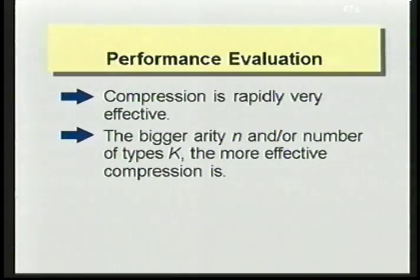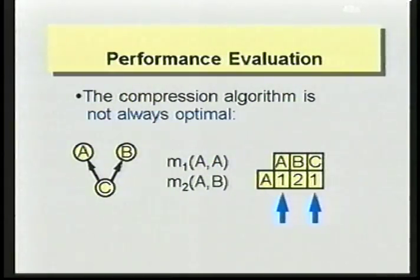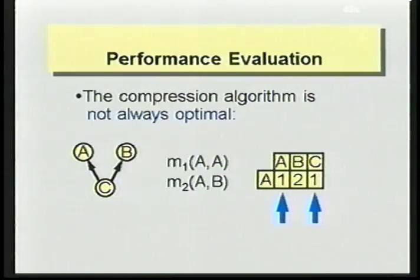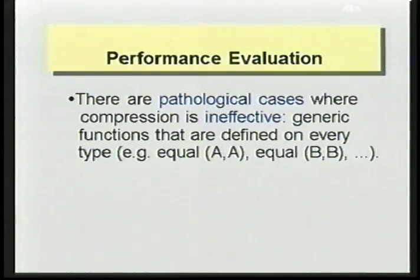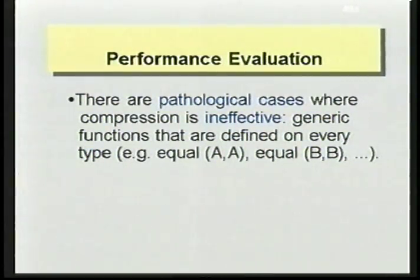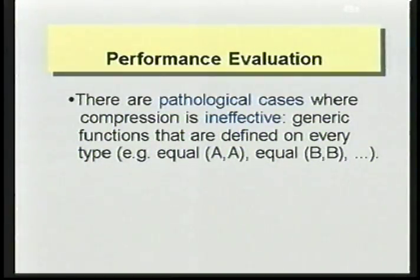For the bad news: the compression algorithm is not always optimal. There are cases where after compression, two columns are still identical. Moreover, there are pathological cases where compression is totally ineffective — for instance, a generic function defined over the whole type hierarchy for every type, such as an equality function defined for every pair of types like A-A, B-B, C-C, and so on.